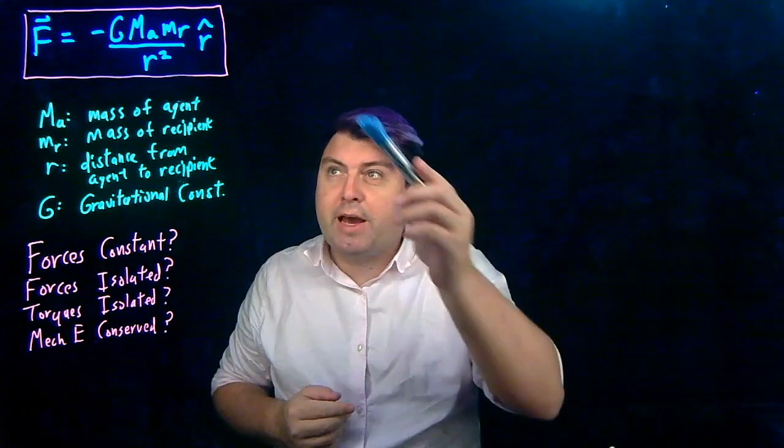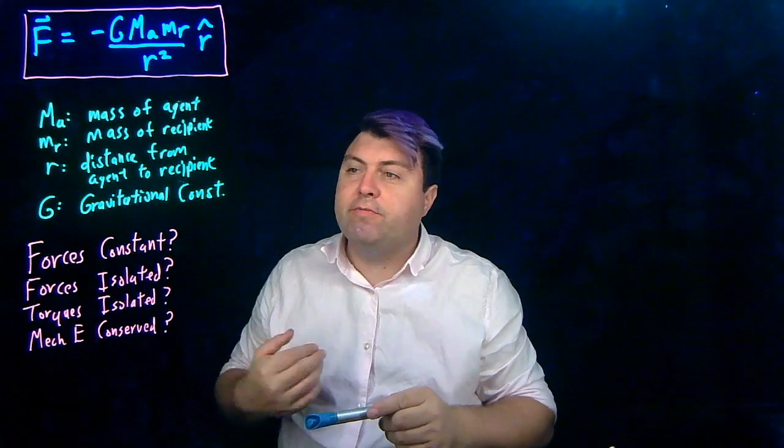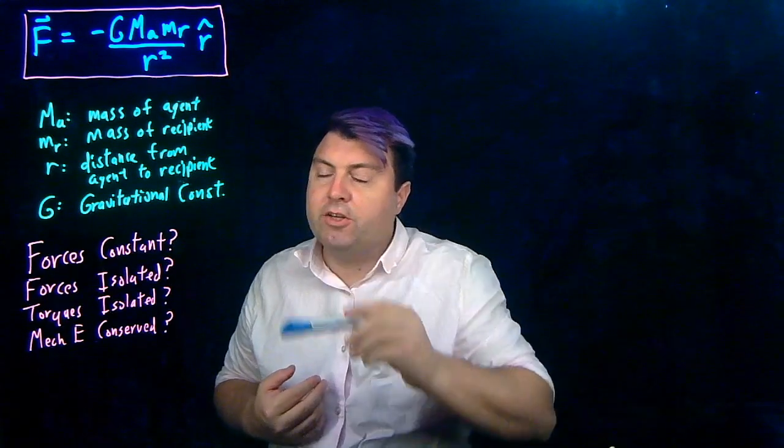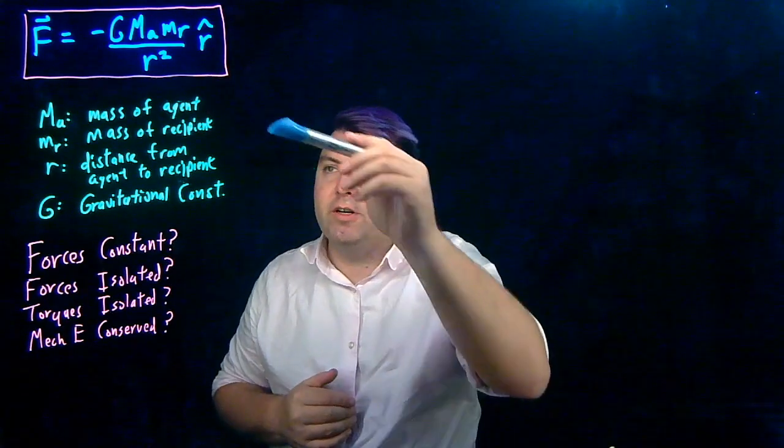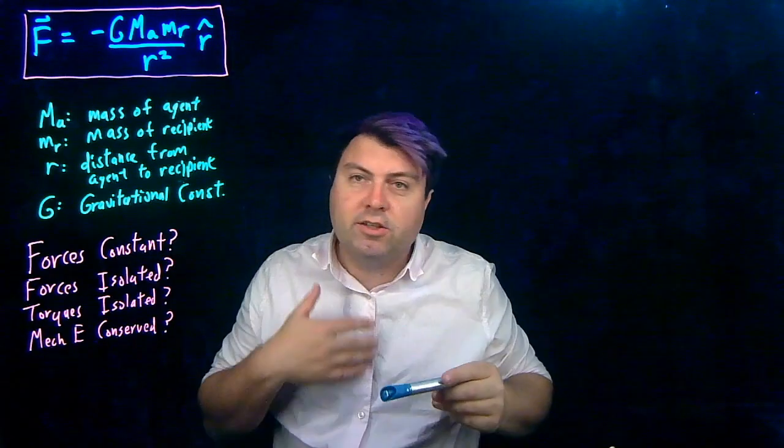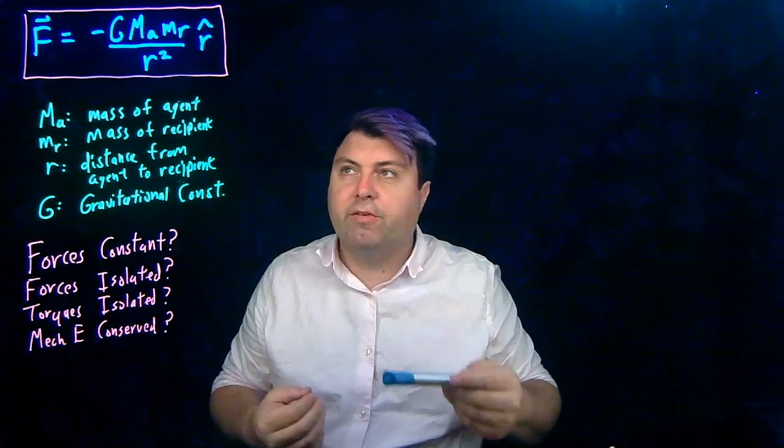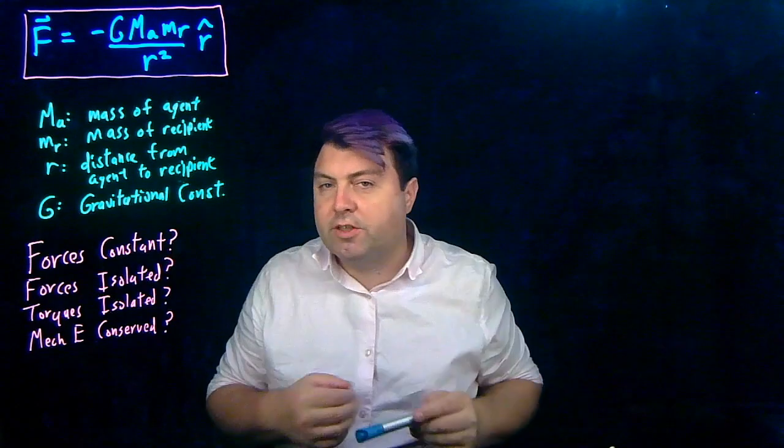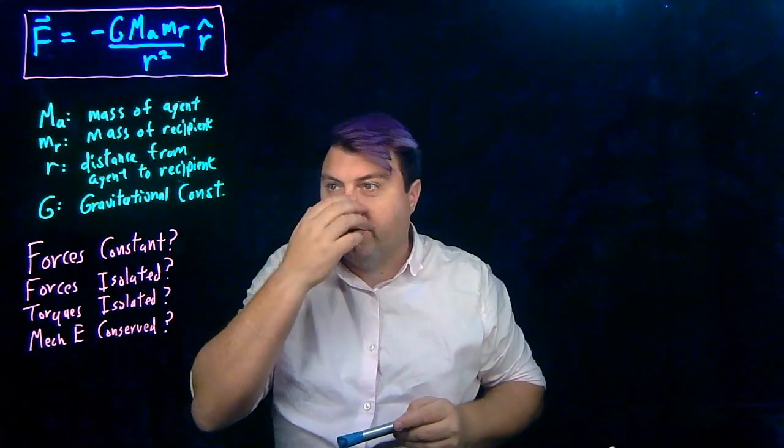Let's look back at our force and see when they would be constant. So G, the gravitational constant, is just always going to be constant. m_A, the mass of the agent, is going to be constant unless things get really weird. m_R, the mass of the recipient, also going to be constant unless things get really weird.